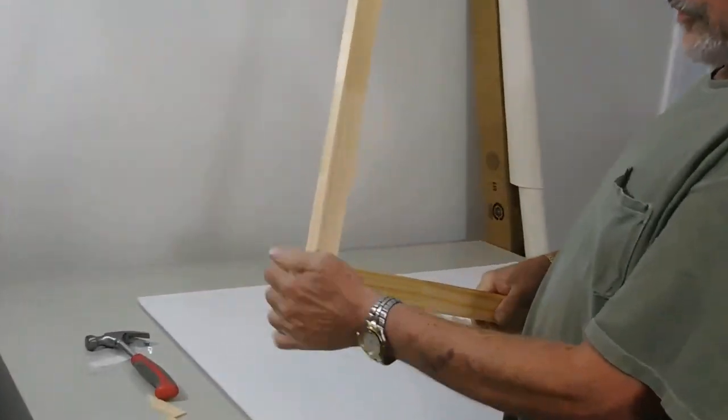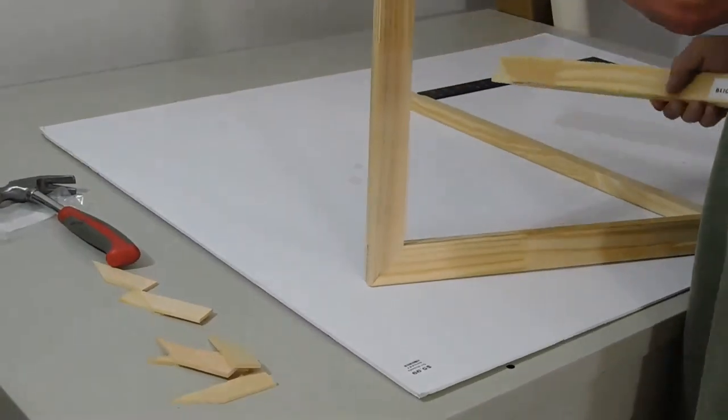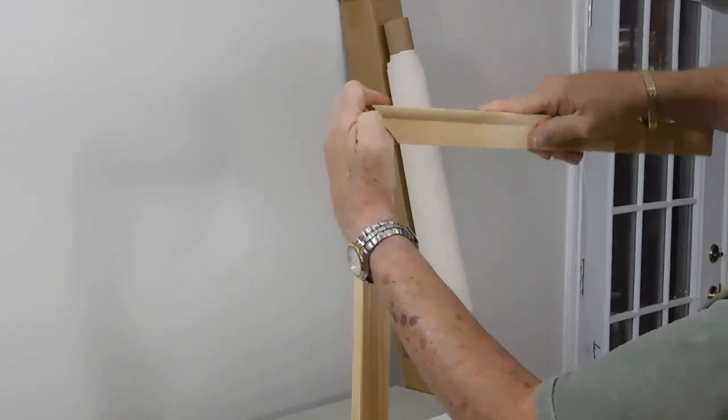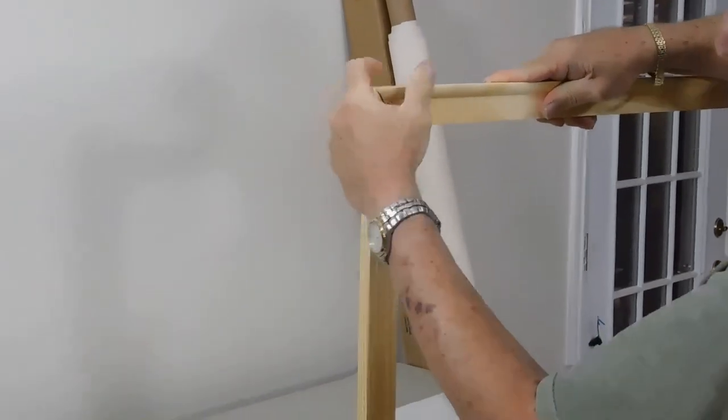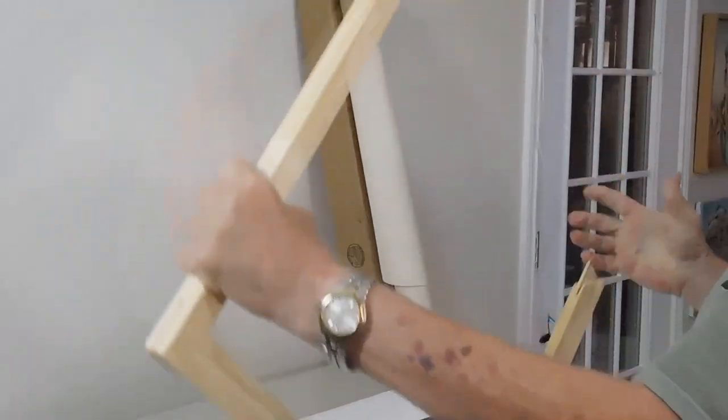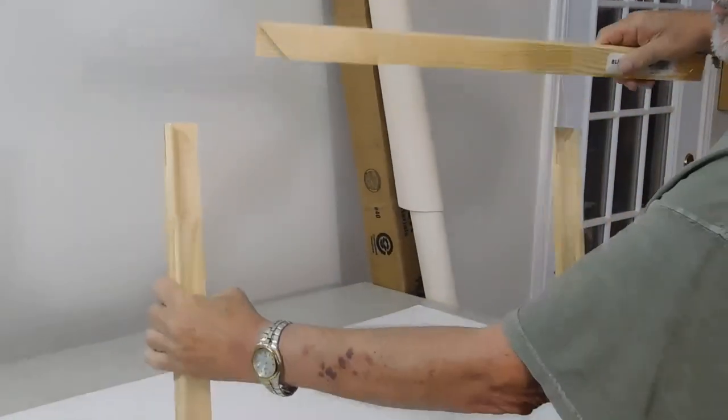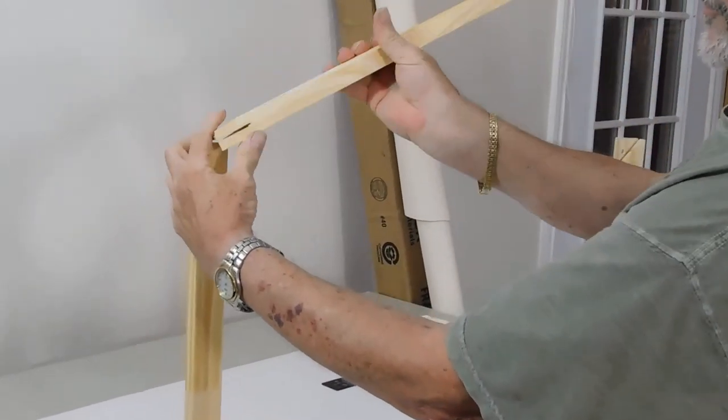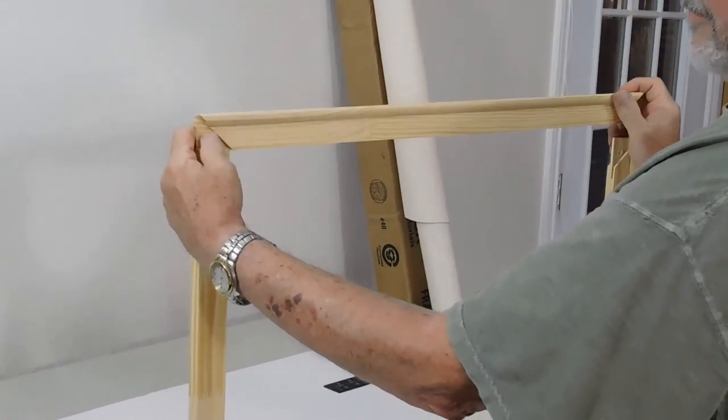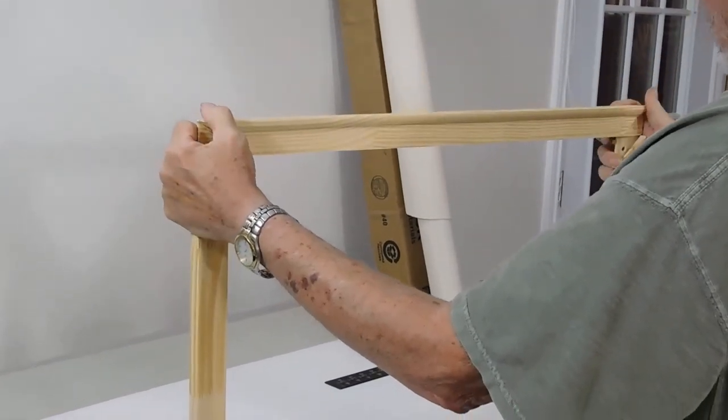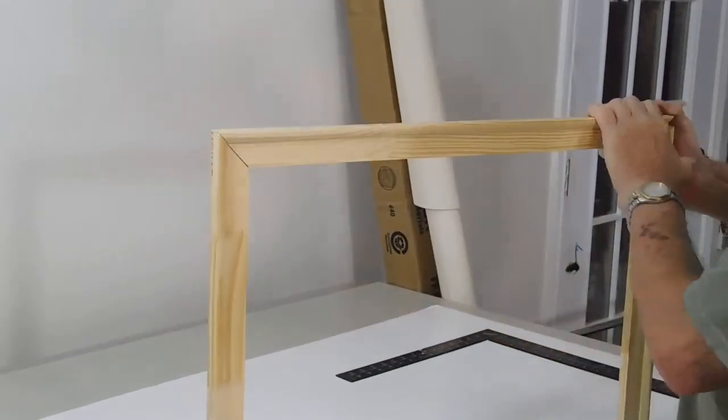In fact, these particular stretcher strips are pretty precise. Years ago, the ones you'd buy were a lot harder to square. You had to do it all manually. These things almost square themselves. So we just fit them together with the bevel to one side and the flat to the other.